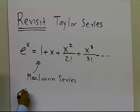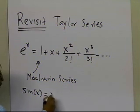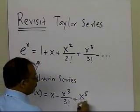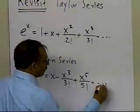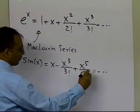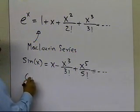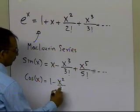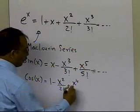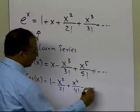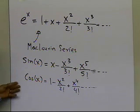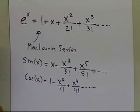Some other McLaurin series you might have seen: sin of x is x minus x cubed over factorial 3, plus x to the power 5 divided by 5 factorial, and so on. Another one is cos of x: cos of x is 1 minus x squared over factorial 2, plus x to the power 4 over factorial 4, and so on. There are many examples of McLaurin and Taylor series for different types of functions.